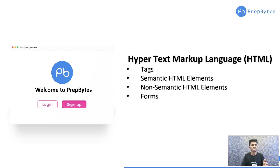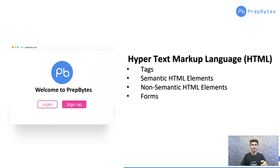Semantic HTML elements are tags which tell you exactly what they do — examples being the table tag or the paragraph tag. Non-semantic elements, on the other hand, don't tell you their functionality — examples being the div and the span element. They are mostly used to contain multiple elements inside them.